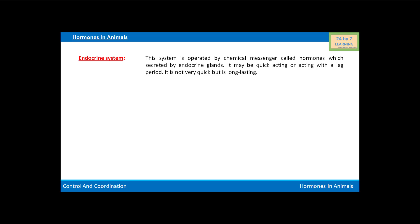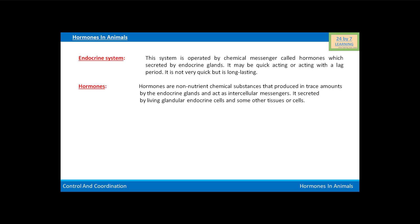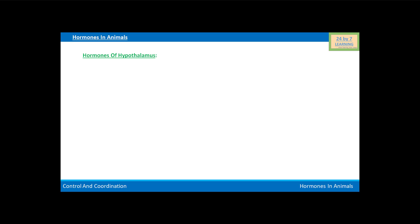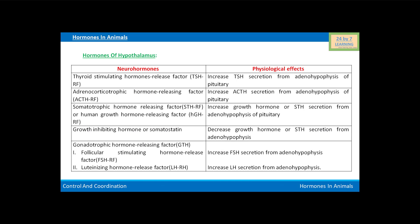The endocrine system is not very quick but it is long lasting. Now we will know what hormones are. Hormones are non-nutrient chemical substances that are produced in trace amounts by the endocrine glands and act as intercellular messengers. They are secreted by living glandular endocrine cells and some other tissues or cells.